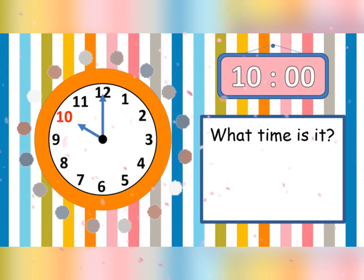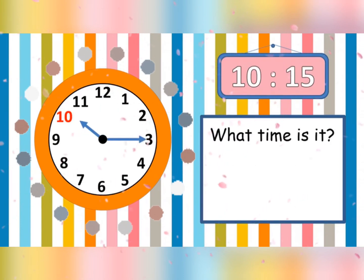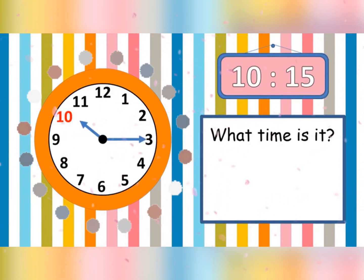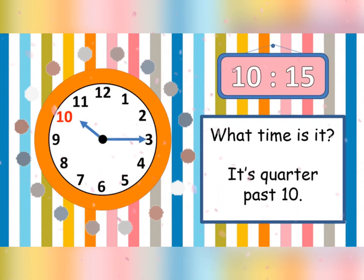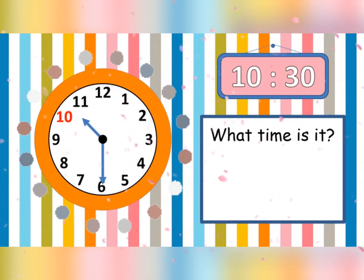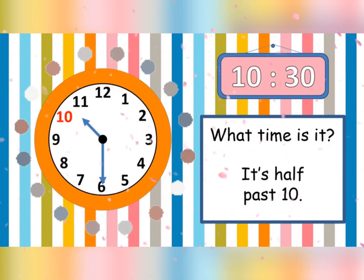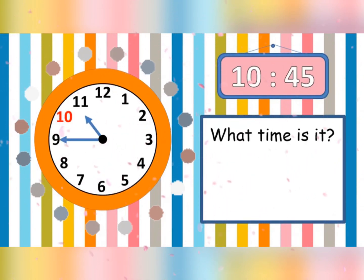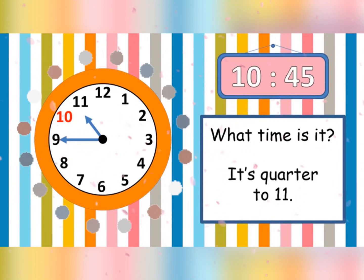What time is it? It is 10 o'clock. What time is it? It is quarter past 10. What time is it? It is half past 10. What time is it? It is quarter to 11.